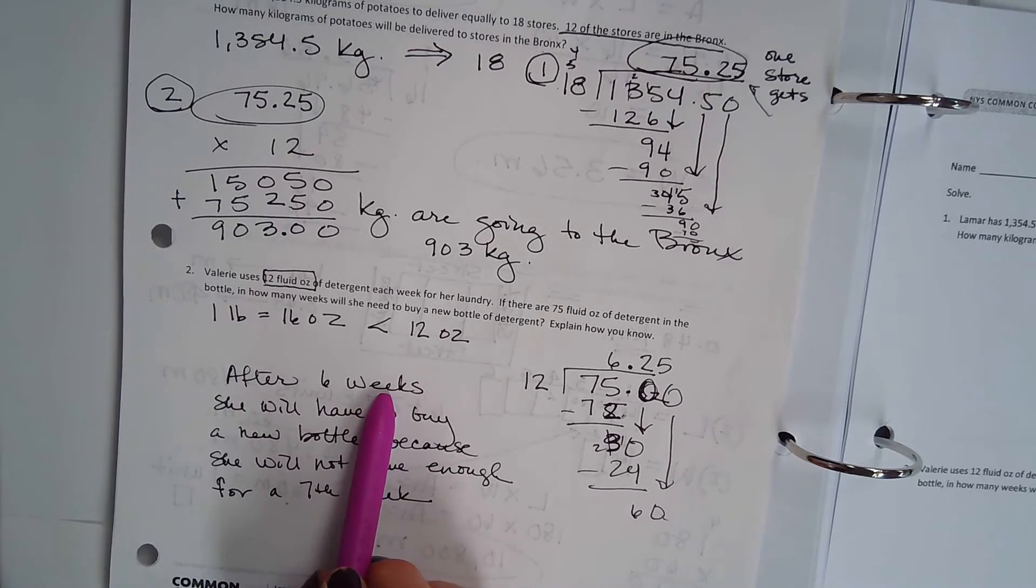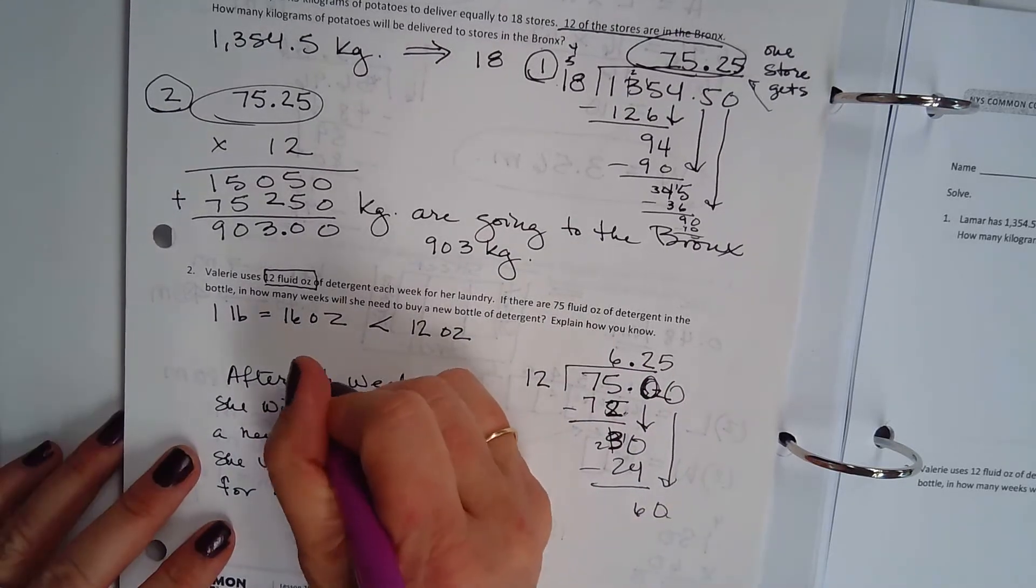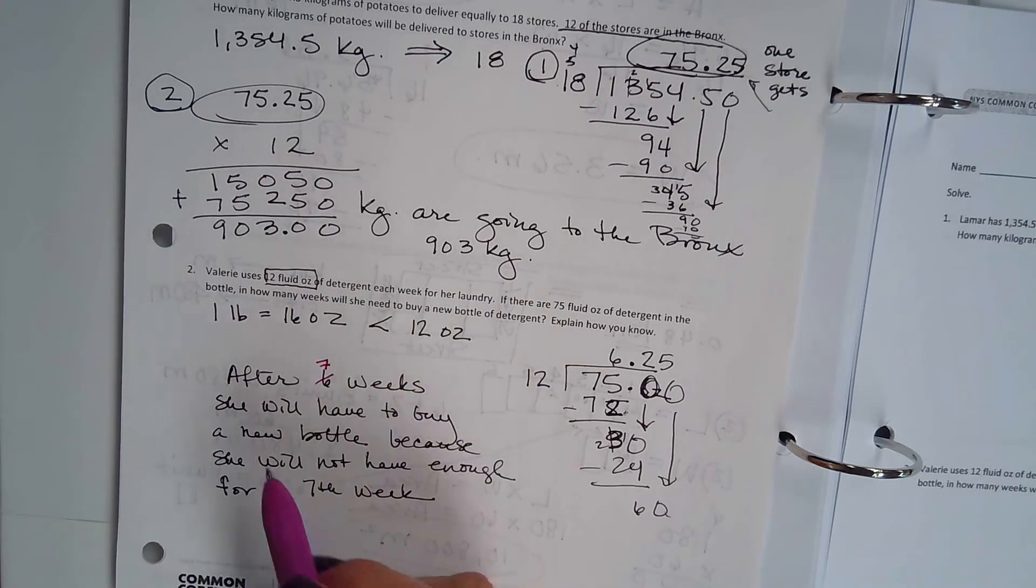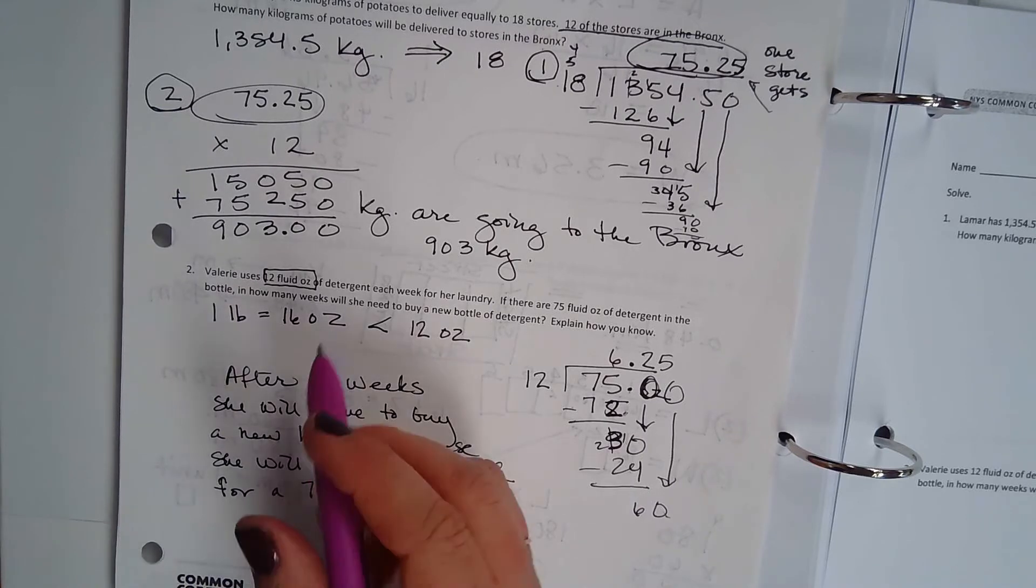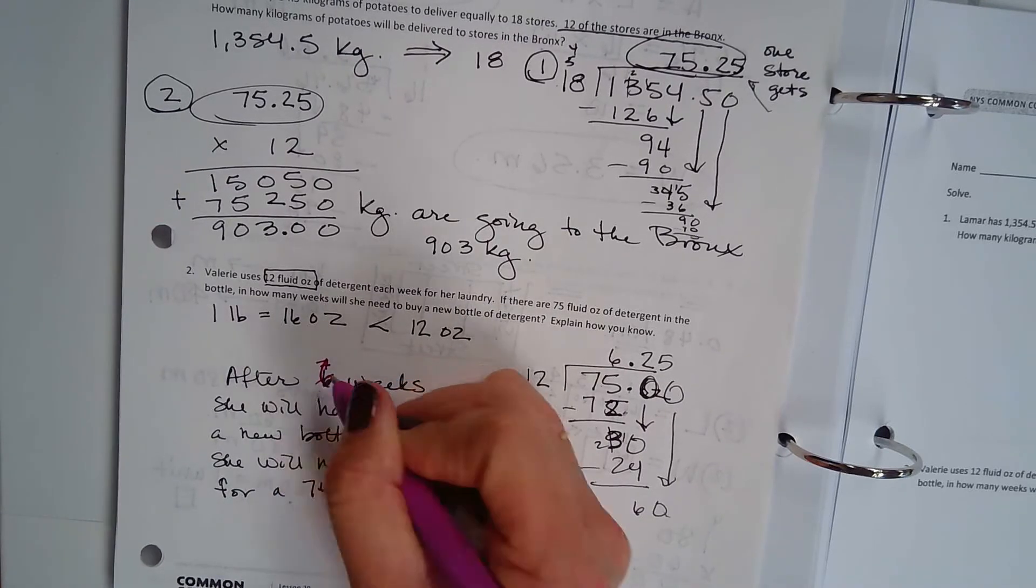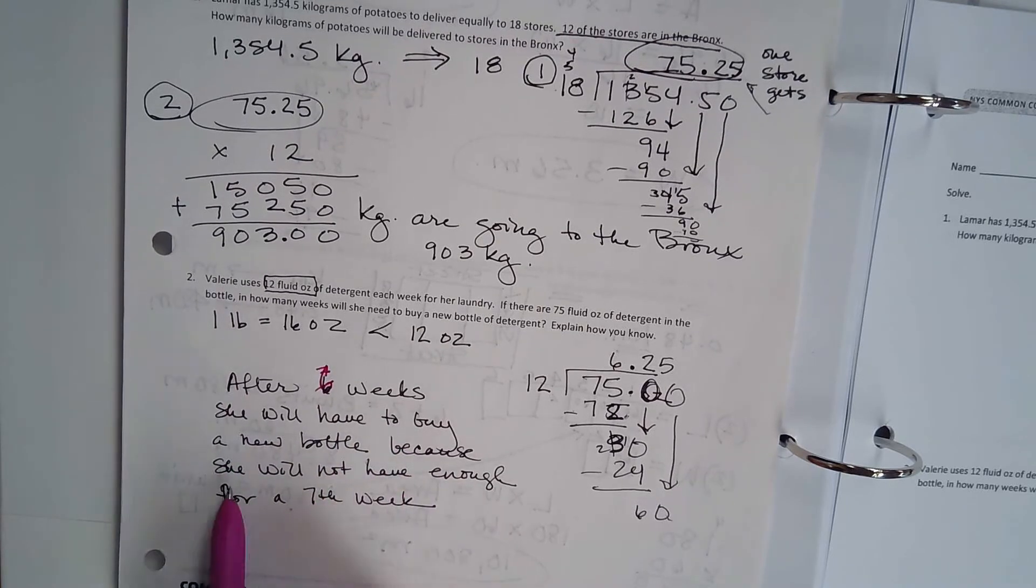Because what we're trying to find is how often will she need to buy a new bottle of detergent? After six weeks, she will have to buy a new bottle because she will not have enough for a seventh week.